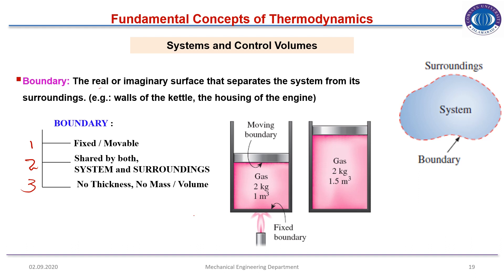In a piston-cylinder system with a gas mass of 2 kg and volume of 1 cubic meter, heat is transferred to the cylinder and the piston moves upward. The piston represents a movable boundary, while the cylinder walls are fixed boundaries.